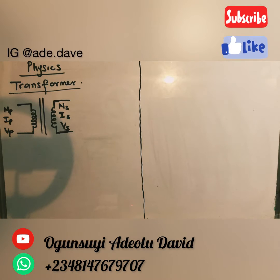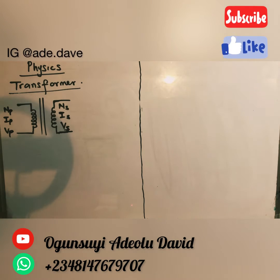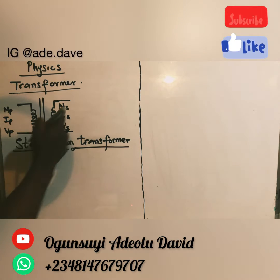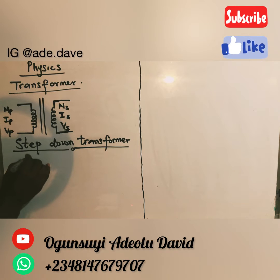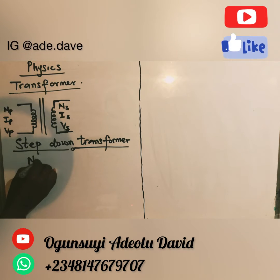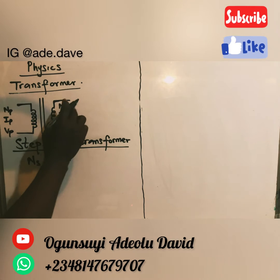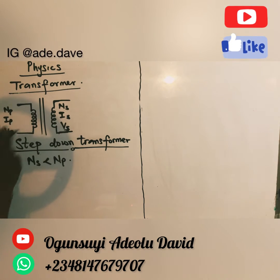Your transformer can either be a step-down or step-up transformer. I am going to start with the step-down transformer. For a step-down transformer, the number of coils in the secondary is lesser than the number of coils in the primary — that is, NS is lesser than NP. All the parameters on the secondary side are lesser than the parameters on the primary side.